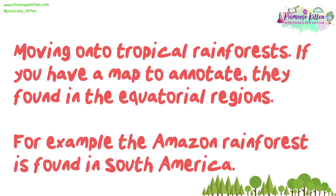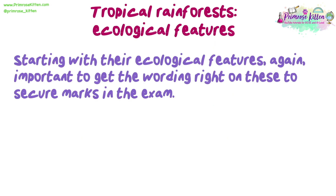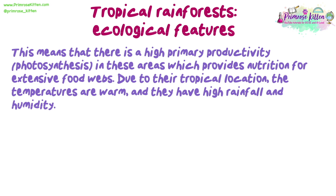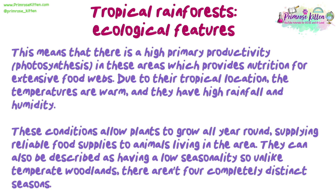Moving on to tropical rainforests. If you have a map to annotate, they are found in the equatorial regions — for example, the Amazon rainforest is found in South America. Starting with their ecological features, it is again important to get the wording right to secure marks in your exam. Firstly, they have very high light levels as they are found in and around the tropics, which receives the most solar insolation due to the tilt of the earth on its axis. This means there is high primary productivity through photosynthesis, providing nutrition for extensive food webs. Due to their tropical location, temperatures are warm with very high rainfall and humidity. These conditions allow plants to grow all year round, supplying reliable food to animals. They can also be described as having low seasonality — unlike temperate woodlands, there aren't four completely different seasons.